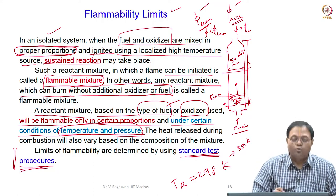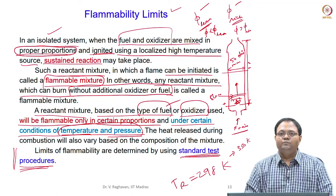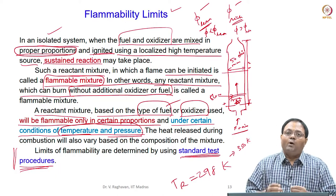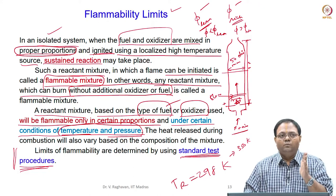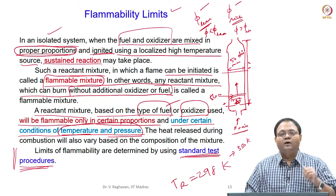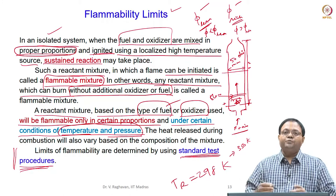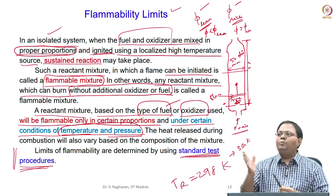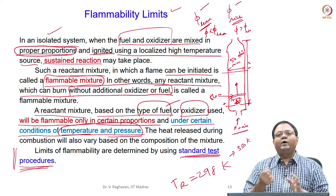Once this test is passed — say at equivalence ratio 0.6 — that mixture is within the flammability limit. If you take an equivalence ratio of 0.3 and repeat the test, the flame may not be initiated at all. So 0.35 may ignite and 0.3 may not. The phi = 0.35 is called the lower flammability limit equivalence ratio. Similarly, when you make the mixture richer and richer, at phi = 2.5 it may not ignite. So 2.45 may ignite and 2.5 may not, making phi = 2.5 the upper flammability limit.